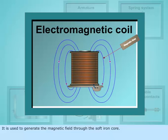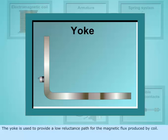The yoke is used to provide a low reluctance path for the magnetic flux produced by coil.